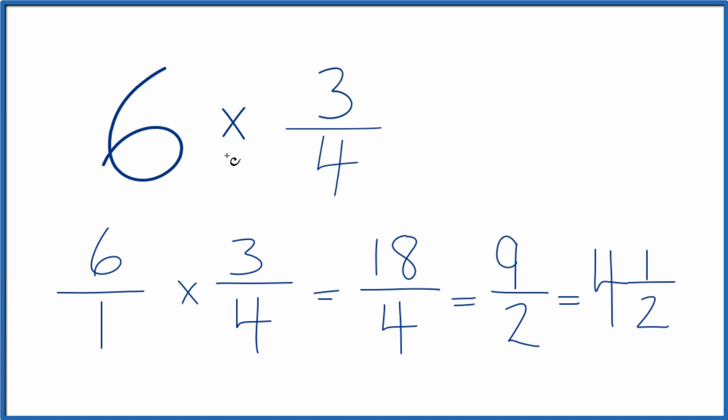This is Dr. B, multiplying 6 times 3 fourths. You get 9 over 2, or you could call that the mixed number 4 and 1 half. Thanks for watchin'.